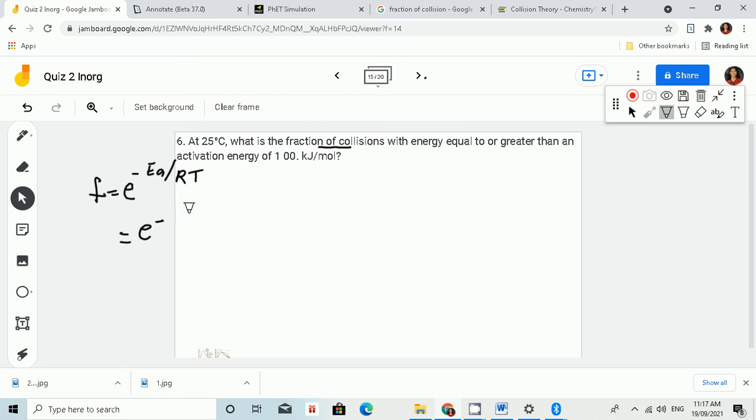E raised to the negative Ea. We have 100 kJ/mol. Since this is in kilojoules, we will convert that to joules by multiplying by a thousand. So 100 kilojoules, that is 100,000 joules per mole.